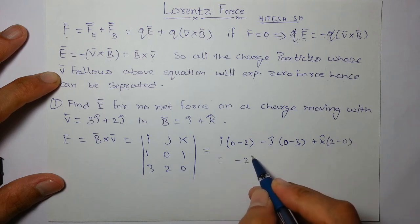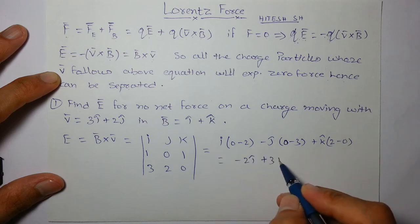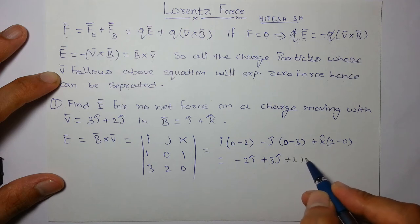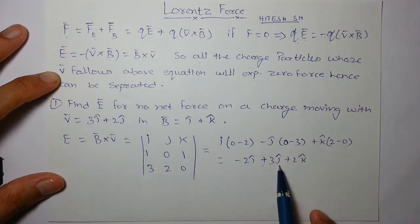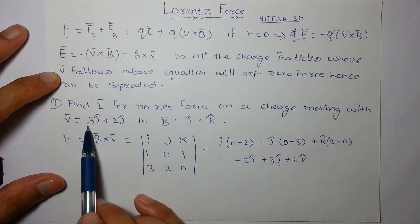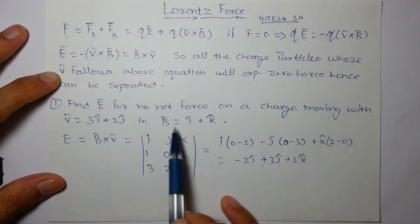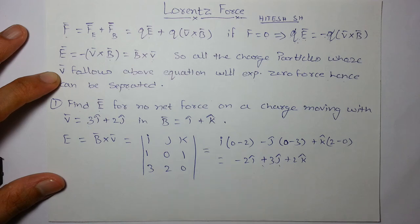So it is minus 2 I, plus 3 J, and plus 2 K is the value of electric field for which there will be no net force if the particles are moving with this velocity in this uniform magnetic field.